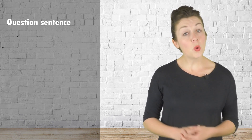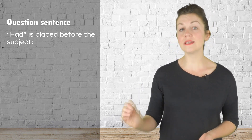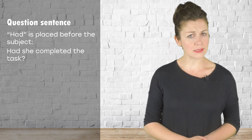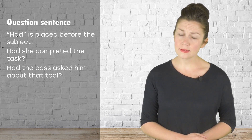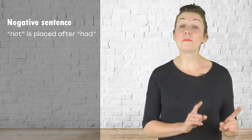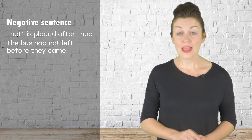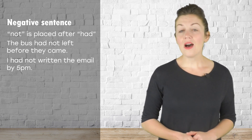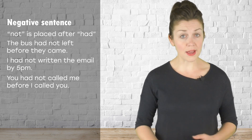In questions, the auxiliary verb had is placed before the subject at the beginning. For example: had she completed the task? Had the boss asked him about that? For negative sentences, the particle not is placed after had. For example: the bus had not left before they came. I had not written the email by 5pm. You had not called me before I called you.